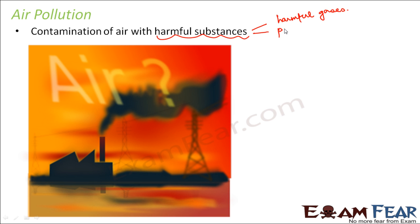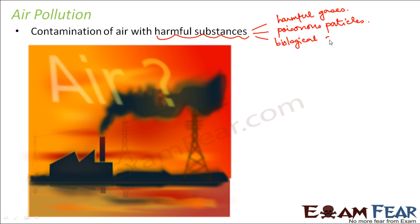These harmful substances can also be some poisonous particles — small tiny particles which, if they enter inside our body, can cause serious illness. They could also be some biological molecules. For example, there are many molecules because of whose presence people often suffer from allergy, such as pollens or dust. So all these things often cause allergies in people, and all these kinds of unwanted substances can cause air pollution.